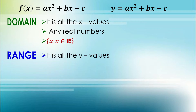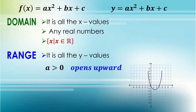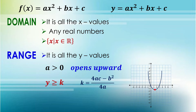Now let's have the range. The range is all the y values. From here, we will take note of the orientation of our graph. If a is positive or greater than zero, it means that the parabola opens upward. In this parabola, we have our minimum value. To get that minimum value, we just need to get the y-coordinate of our vertex. So we can say that y is greater than or equal to k. To get the value of k, we need to apply the formula k = (4ac - b²) / 4a. After getting our minimum value, we write it in notation form: y such that y is greater than or equal to k.